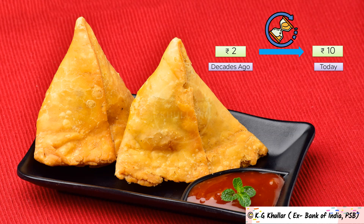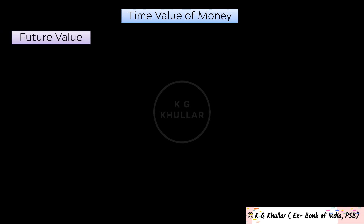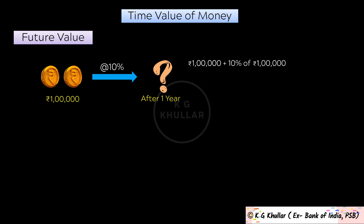In time value of money there are two parts: one is future value of money and the other is present value of money. Say if today you invest Rs. 1 lakh and the rate of return is 10%, then the value after one year will be 1 lakh plus 10% of Rs. 1 lakh, or we can say it as 1 lakh multiplied by 1 plus 10%, that is Rs. 1 lakh 10,000.